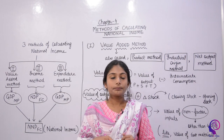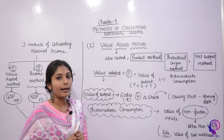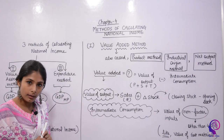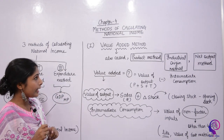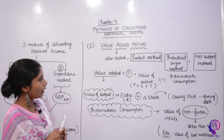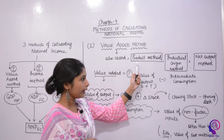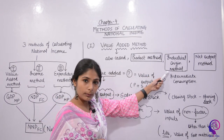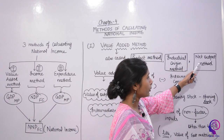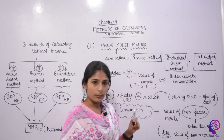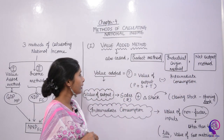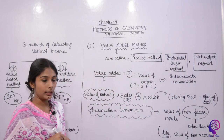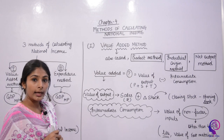Now we start with our first method, that is the Value Added Method. This method is also called the Product Method, the Industrial Origin Method, and the Net Output Method. Value-added means the formula for value added, which gives us GDP at Market Price.